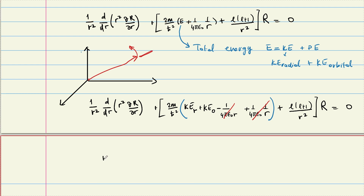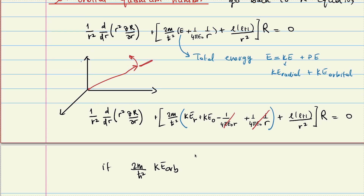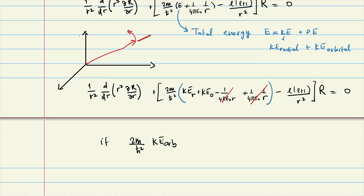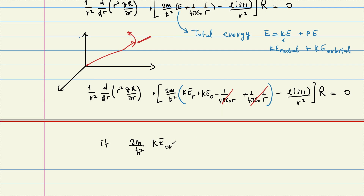So (2m / ℏ²) times KE_orbital should equal L(L+1) divided by r squared. If this condition holds, then our equation is separable. Now let's check whether this is too much to ask.